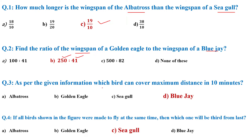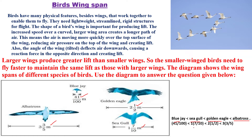Which bird can cover maximum distance in 10 minutes? That's very easy — blue jay is what covers maximum distance in 10 minutes. If all the birds shown in the figure were made to fly at the same time, then which one will be third from last? The answer is seagull.